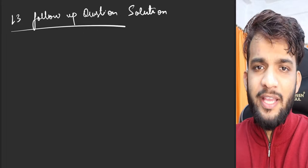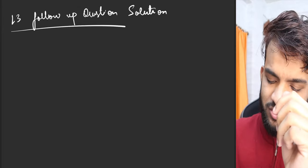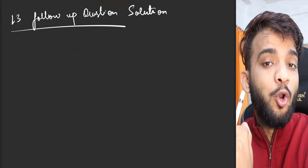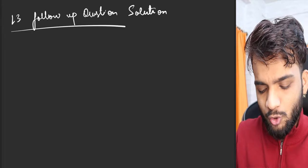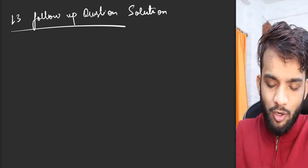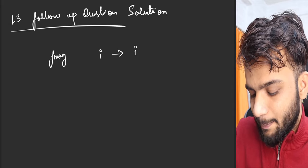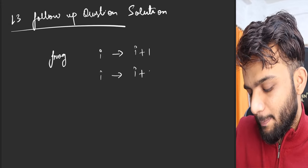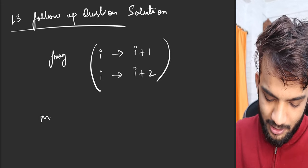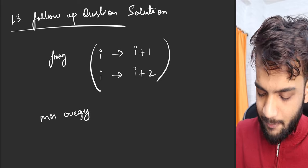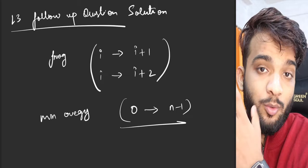Hey everyone, welcome back to the channel. This is going to be a very short video. In this video, I'll be talking about the Lecture 3 follow-up question solution. In Lecture 3, the question we solved was: if the frog could jump from the i-th index to i+1 and from i to i+2, what is the minimum energy to jump from index 0 to index n-1?